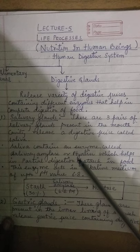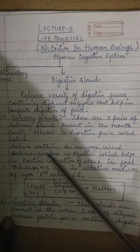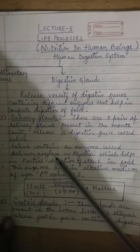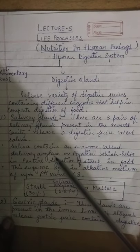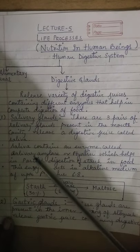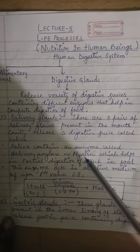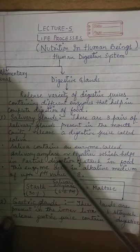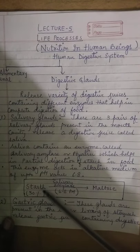Saliva also consists of mucus and an enzyme called lysozyme. We will discuss lysozyme later in the mechanism of digestion. The important enzyme here is salivary amylase, also known as ptyalin. The function of salivary amylase is to help in the partial digestion of starch.